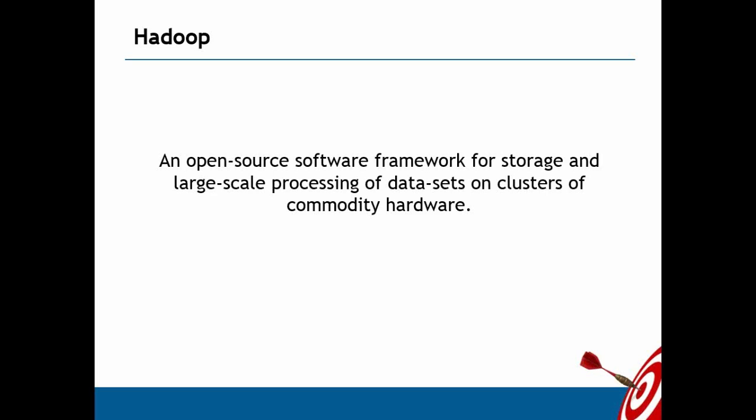Hadoop is mainly designed as a batch processing system for storing data physically in a distributed way and processing it using a parallel processing concept. At a time, you are processing only 64 MB data even if your file is two terabytes. All blocks are processed simultaneously by the framework, and the integrated output is returned to the Hadoop Distributed File System, replicated three times by default.